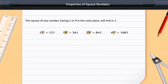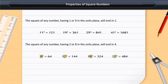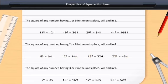The square of any number having 1 or 9 in the units place will end in 1. The square of any number having 2 or 8 in the units place will end in 4. The square of any number having 3 or 7 in the units place will end in 9.